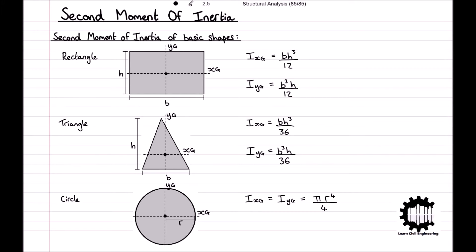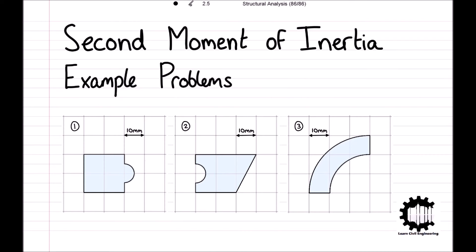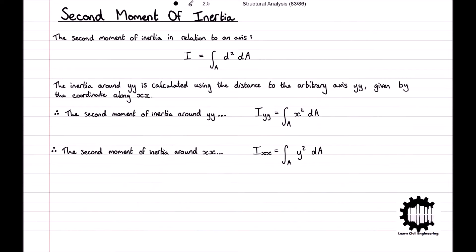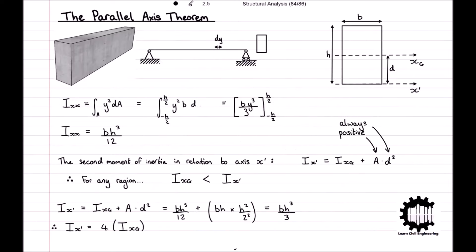In the next video, we will solidify what we have learned today by applying this theory to determine the second moment of inertia for the following complex regions. To recap what we have learned today, we introduced the concept of the second moment of inertia and its significance in the behavior of a structure, learned how to determine the second moment of inertia for a region relative to a centroidal axis, and we finished by introducing the parallel axis theorem and seeing how we can use this to compute the second moment of inertia for complex regions.